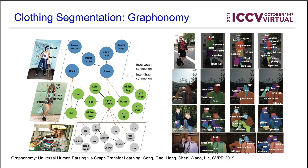For clothing segmentation, we use an off-the-shelf human parsing model called Graphonomy, which gives different clothing types and body parts, resulting in 20 different labels.